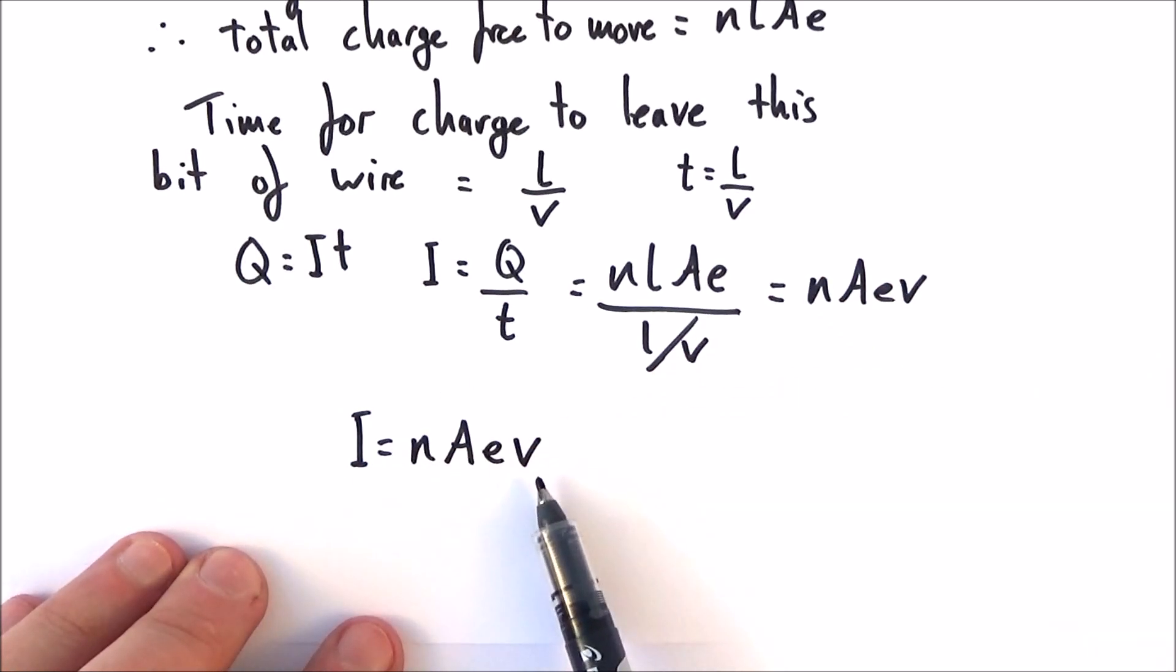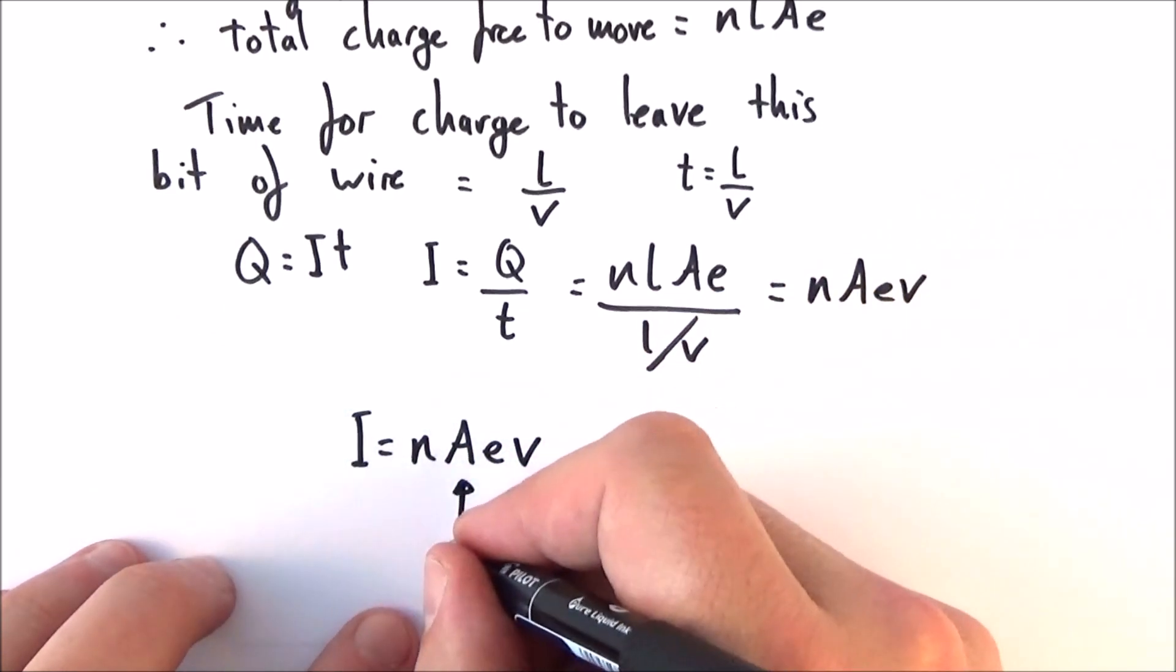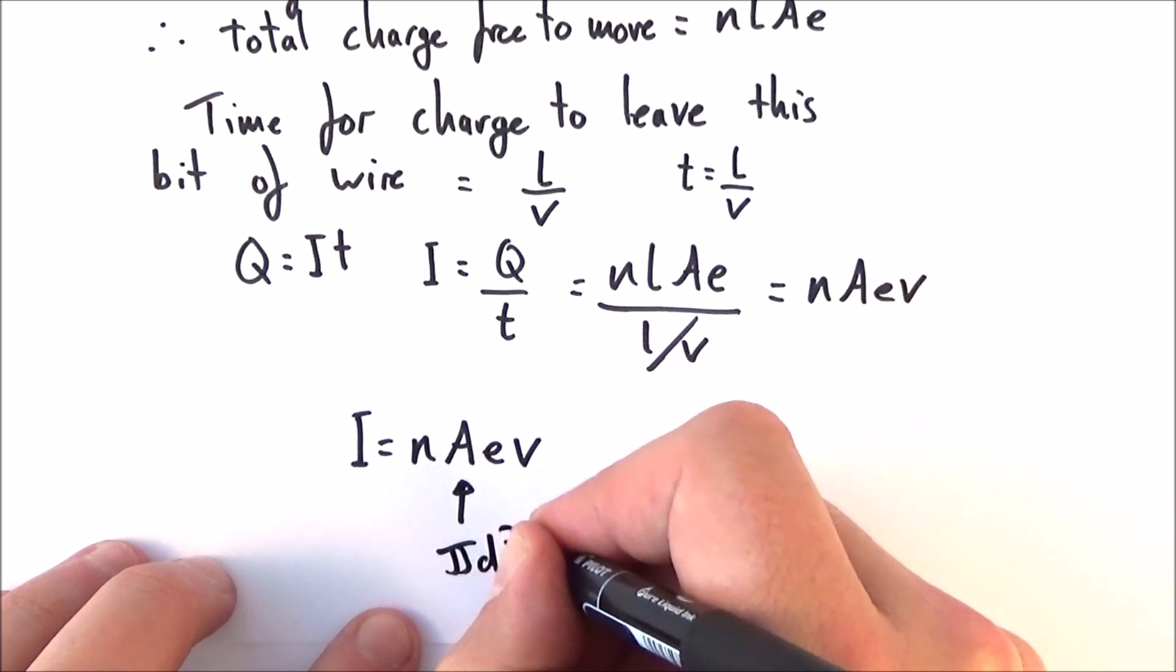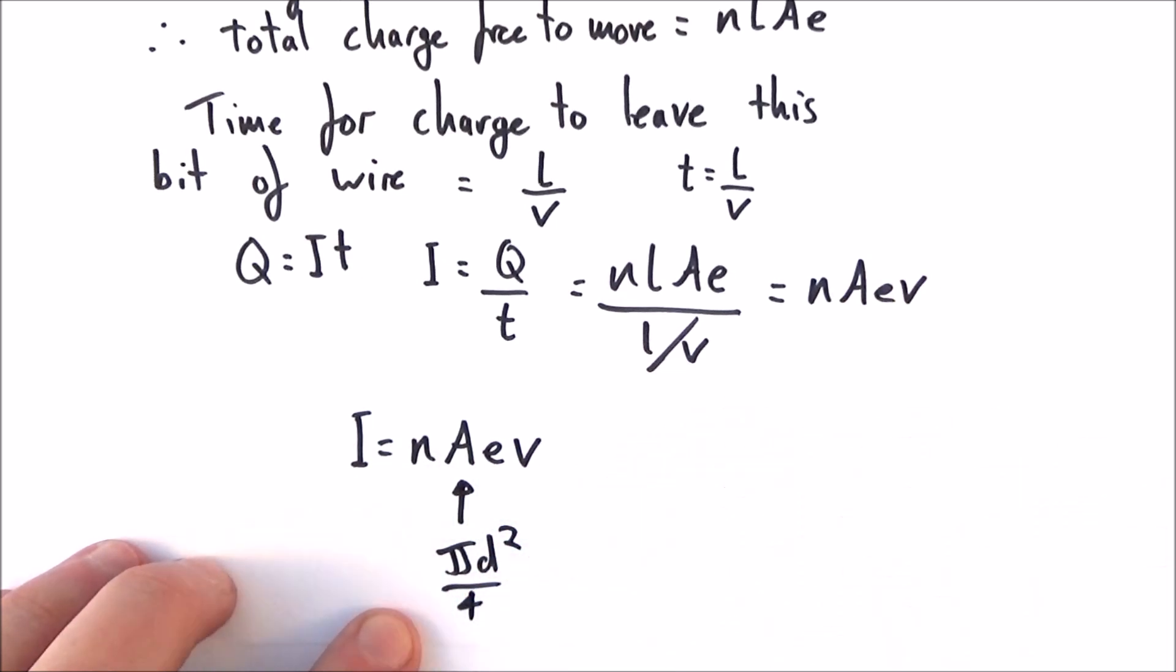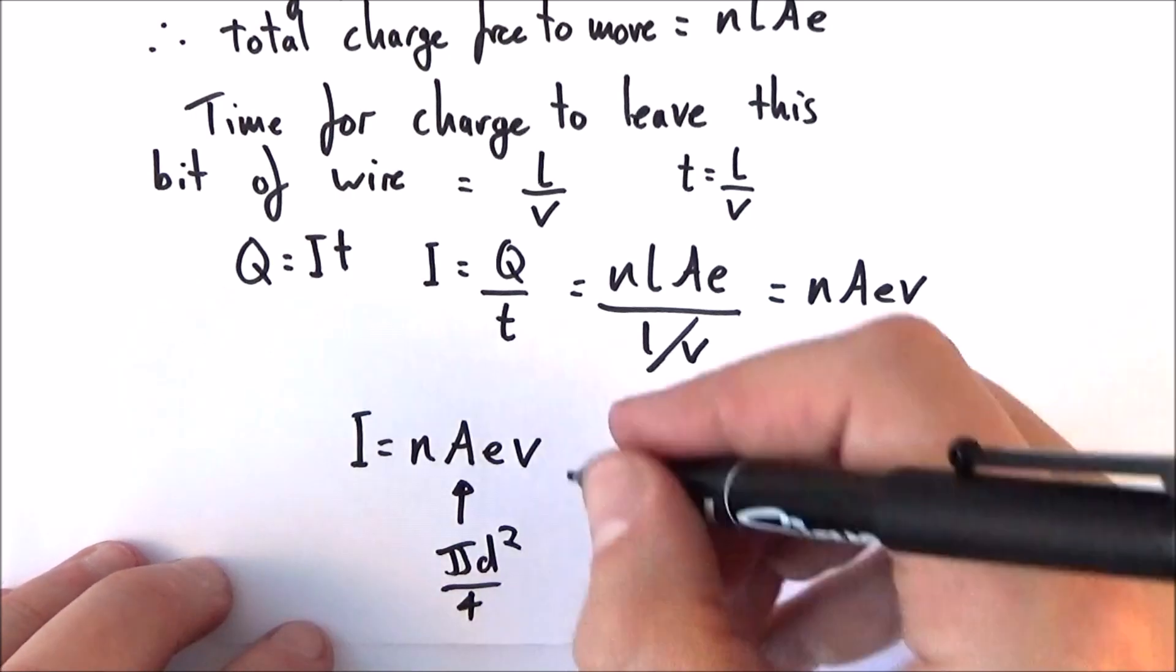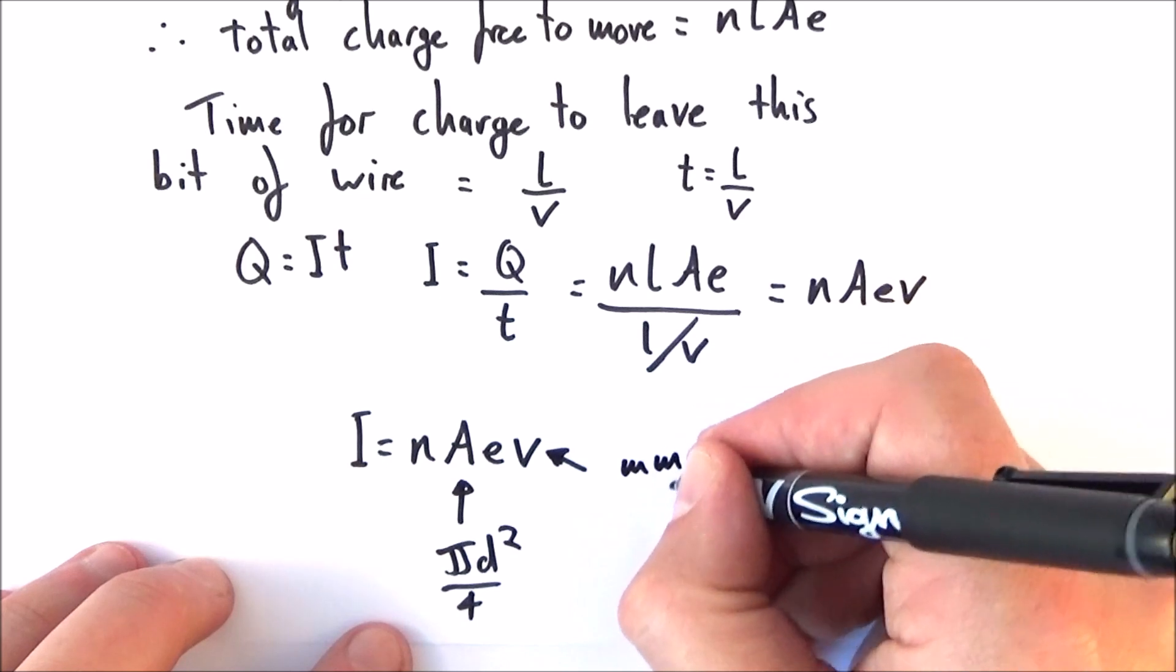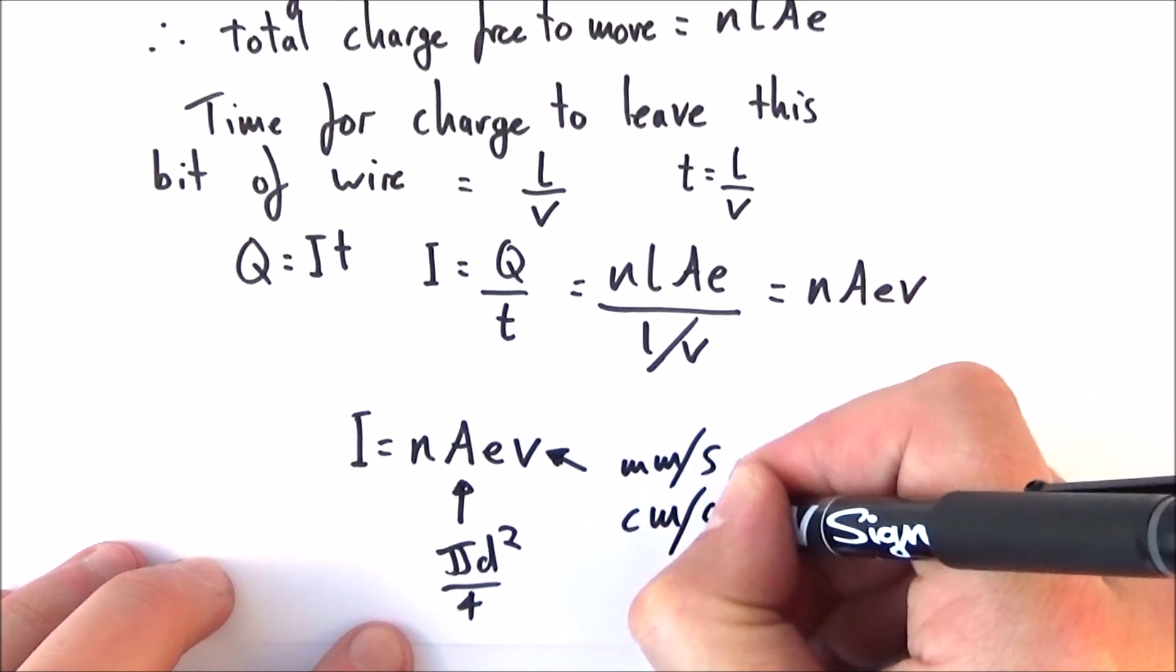And you can rearrange this to find out the drift velocity. And when it comes to doing equations, the biggest thing that you've got to look at is making sure that the area that you calculate is appropriate. Remember that the area is equal to πd² over 4, or πr². And that's kind of a bit of information that you might get given in the question. And this velocity here is often very, very low. And it's in the order of millimeters per second, or perhaps centimeters per second.